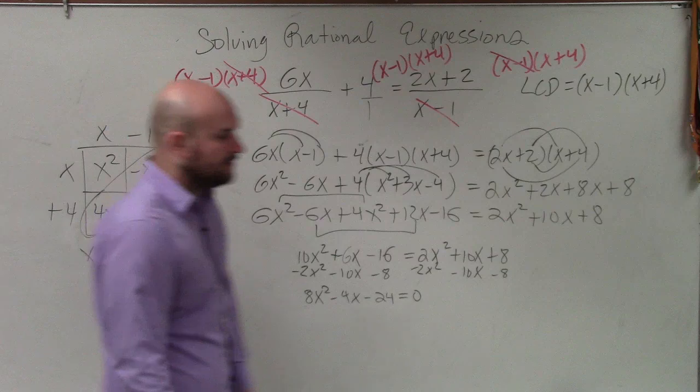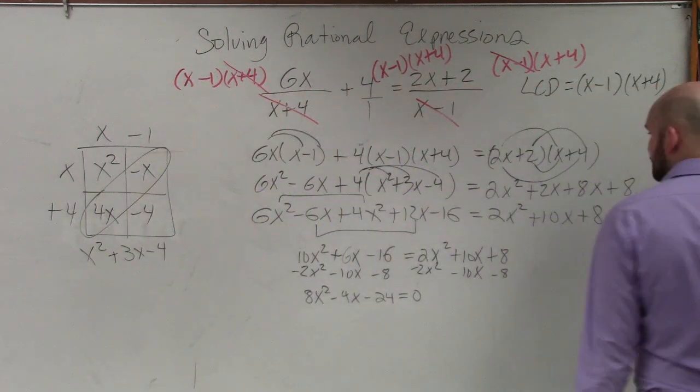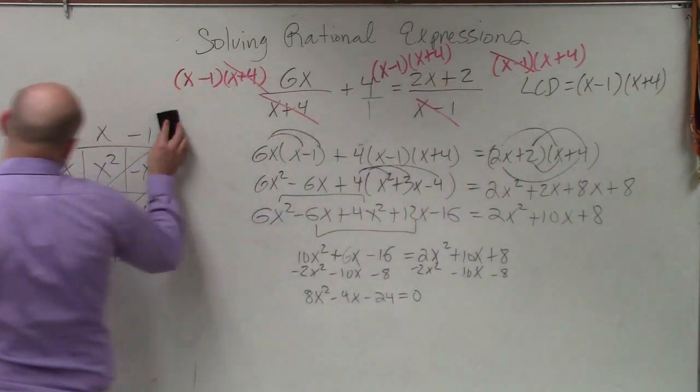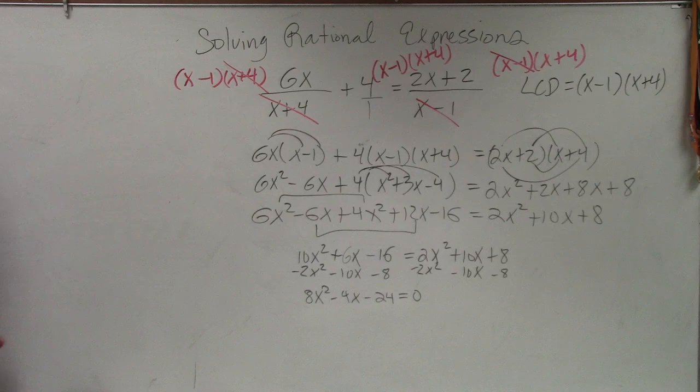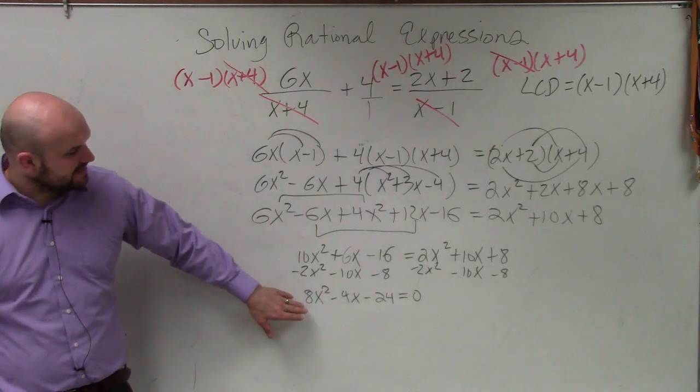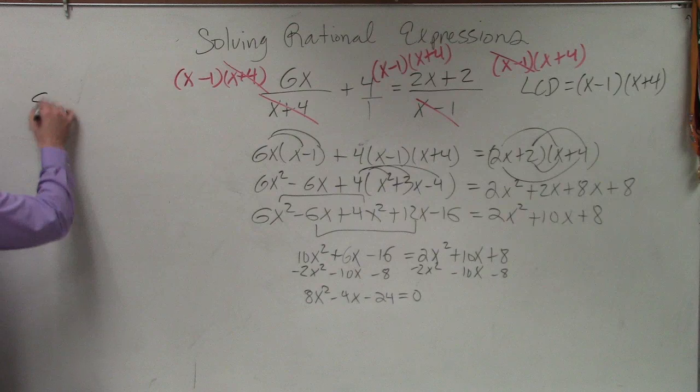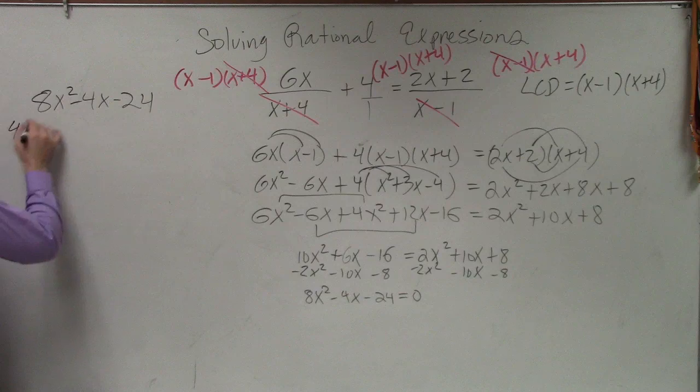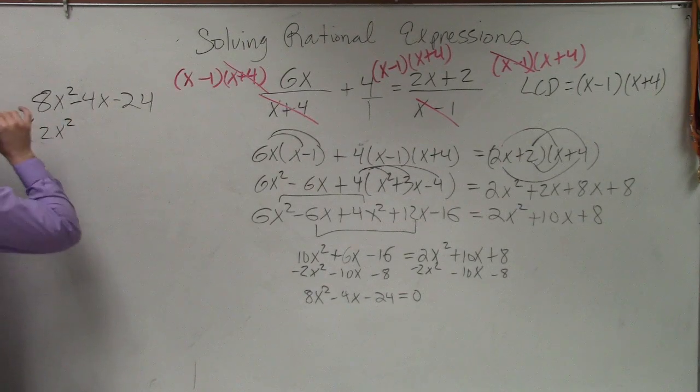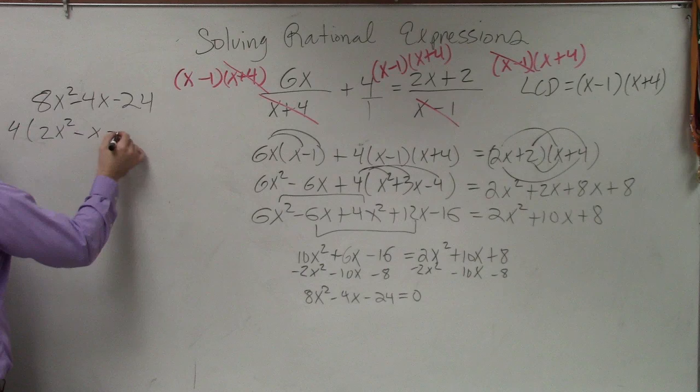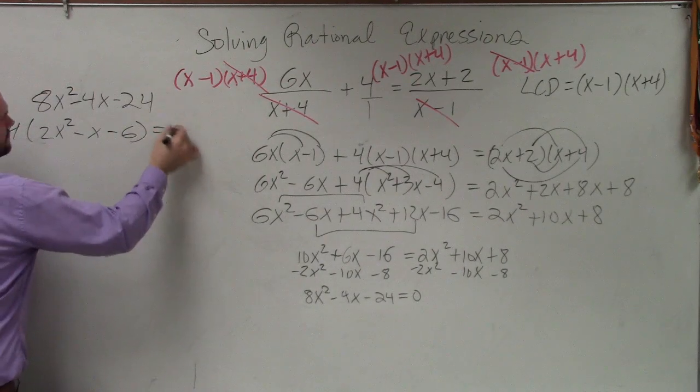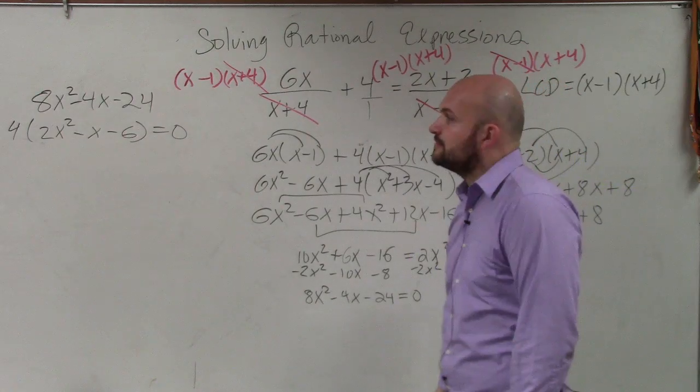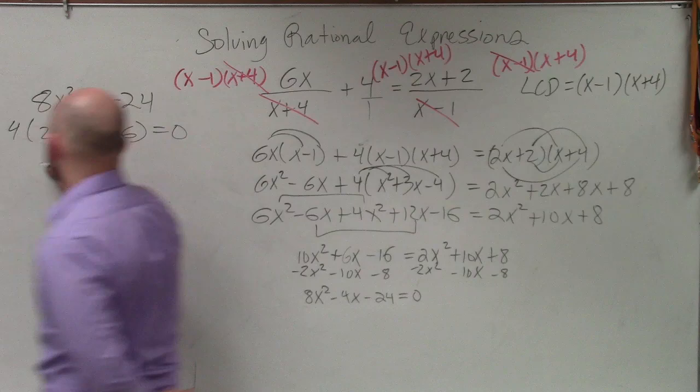And then, what I would recommend doing, ladies and gentlemen, is on this example, I should have gotten one more intermediate one before giving you the difficult one. Basically, what I would do is now we have to factor this. So if I was going to factor this, 8x squared minus 4x minus 24, first thing I would do is factor out a 4. So I'm left with 2x squared minus x minus 6 equals 0.